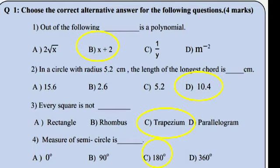Third question: every square is a rectangle, rhombus, and parallelogram, so every square is not a trapezium. Fourth question: the measure of a semicircle — very easy — the answer is 180 degrees. The measure of a semicircle is 180 degrees.